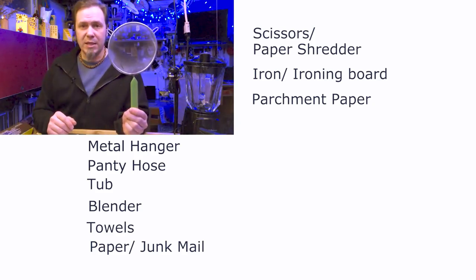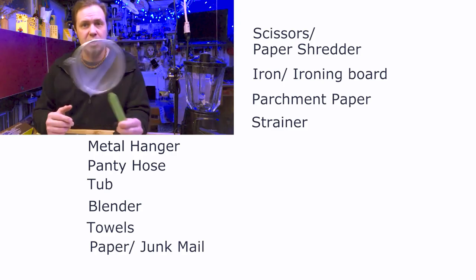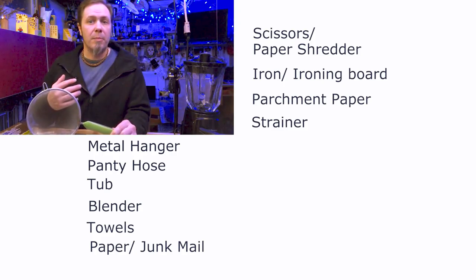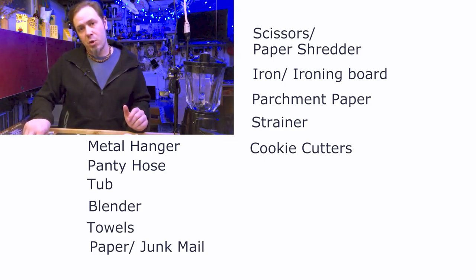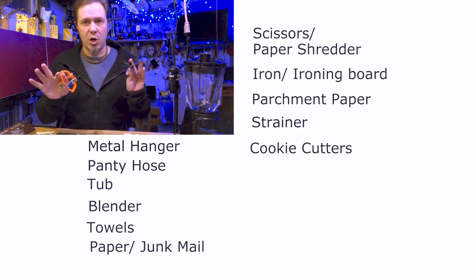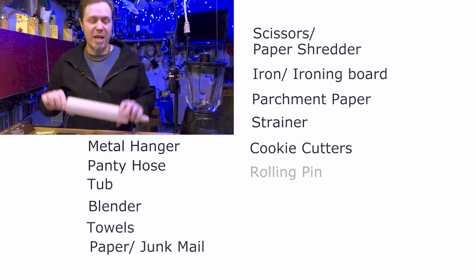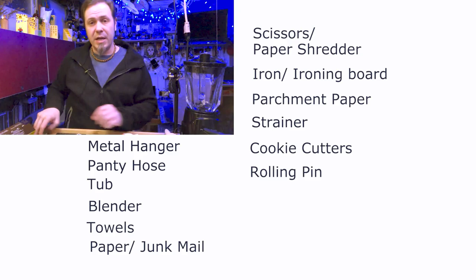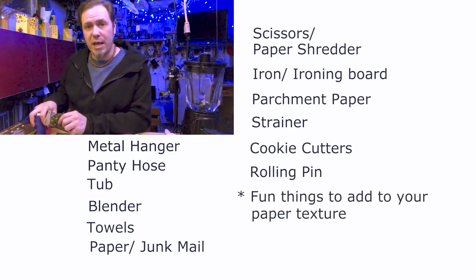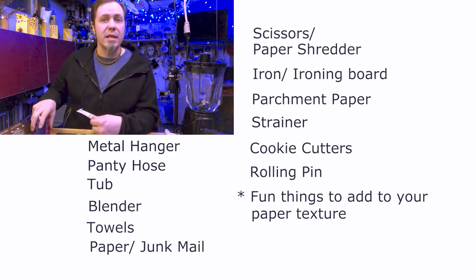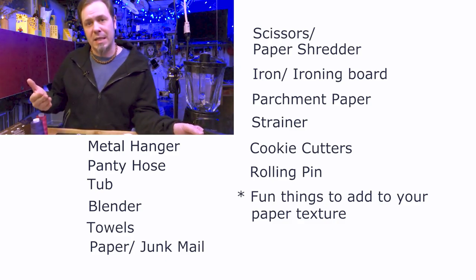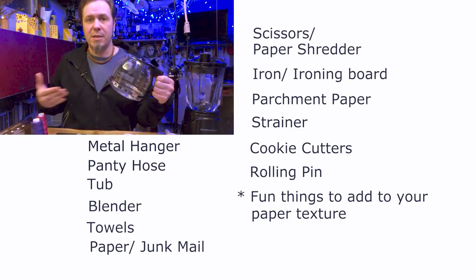So on that optional list is some type of a strainer. This just makes things easier to save a lot of that paper pulp that you're making for later projects. And then you're looking at, depending on what you want to make with your paper, cookie cutters are one of those fun things. A rolling pin is good for various techniques. And anything that you think of as an additive to put into that paper for interest, such as seeds, string, leaves, anything of that sort. Another thing that I think that helps but isn't necessary is some type of a container to hold water just to be able to pour stuff in. Alright, now that I think we've covered everything, let's see what we can create.